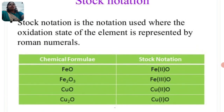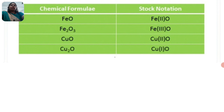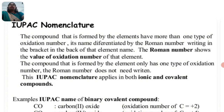See here — the chemical formulas: ferrous oxide, ferric oxide, copper oxide, copper dioxide. We have these formulas, and in stock notation we represent Fe in brackets to show the oxidation state. This is how we represent the chemical formula in stock notation.